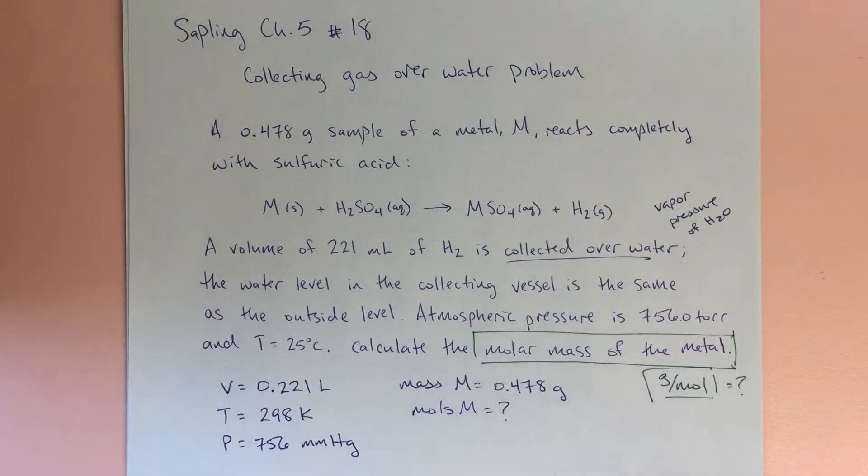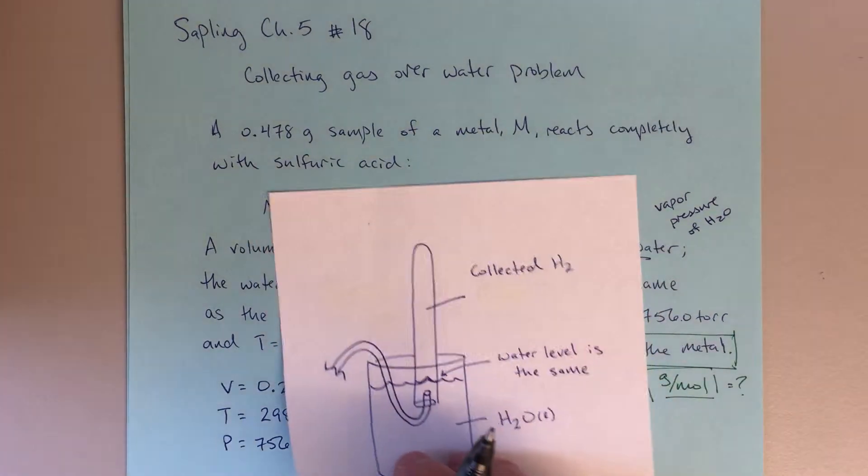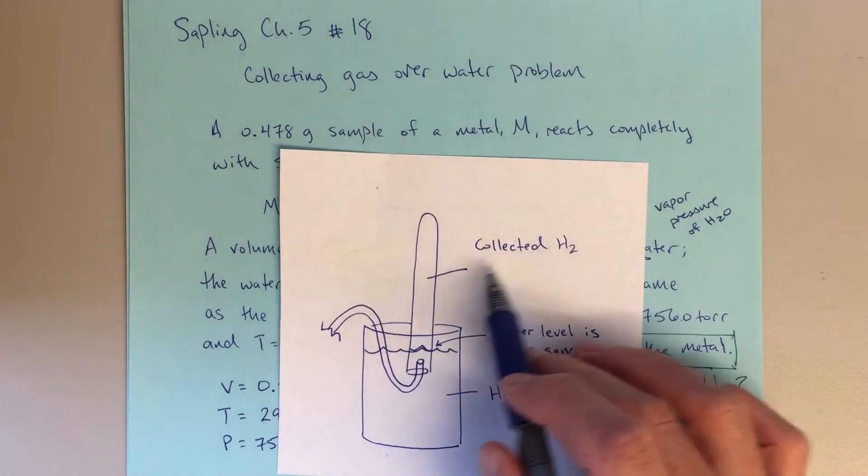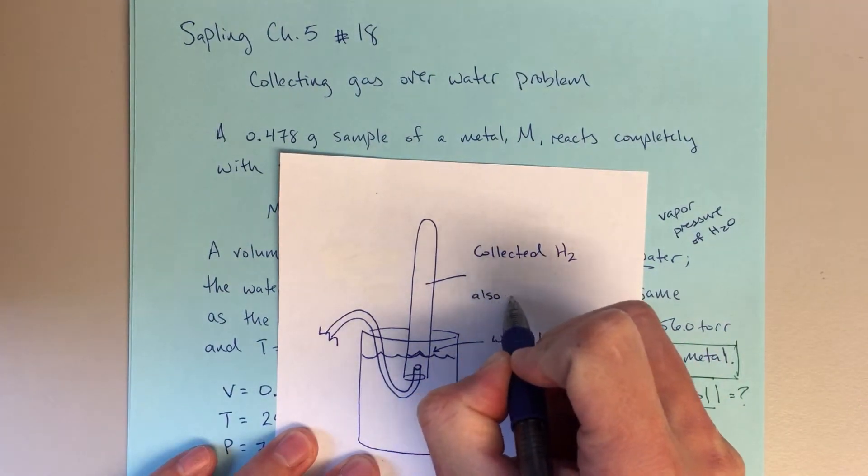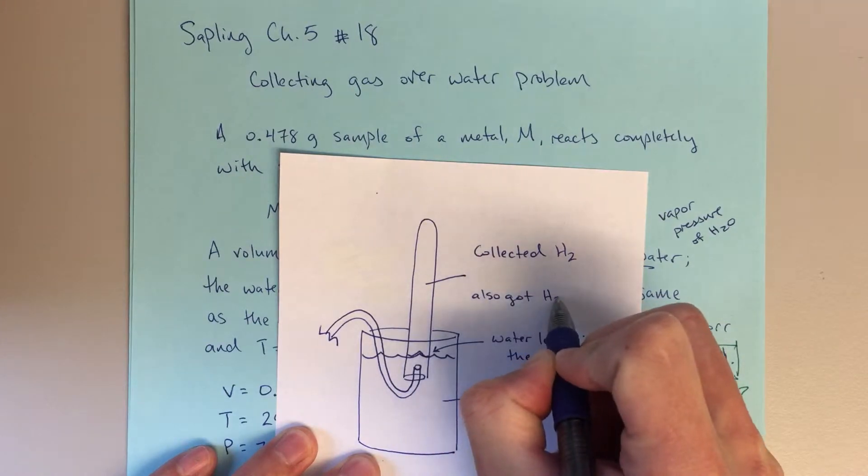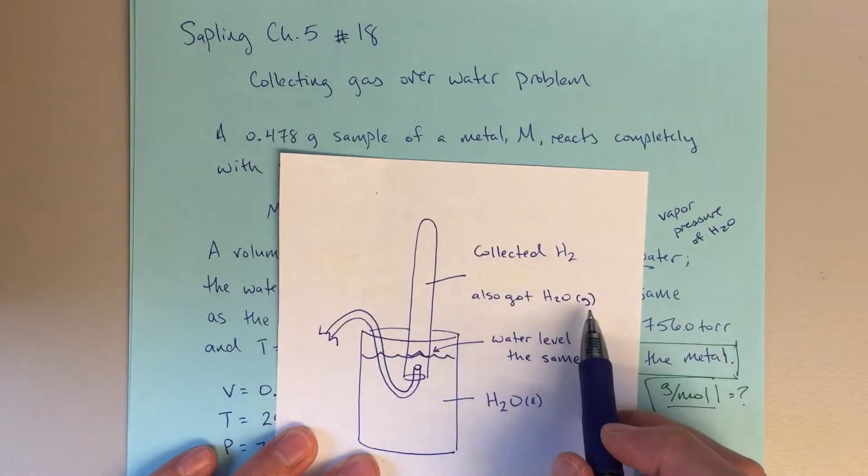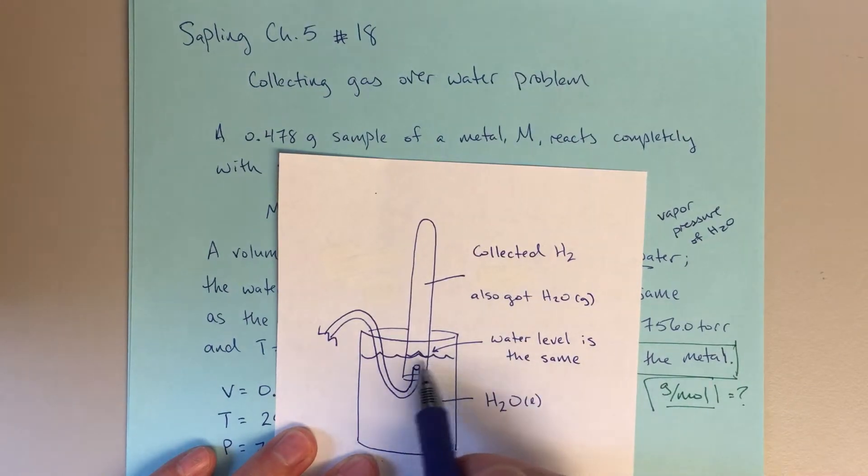So the first thing I'm going to do is I'm going to say, well, what is that vapor pressure? Like in this space up here, that I've got collected H2, I've also got H2O gas, right? I've also got water vapor, because it's a water solution. There's water down here, the vapor pressure is going to put some water in there.